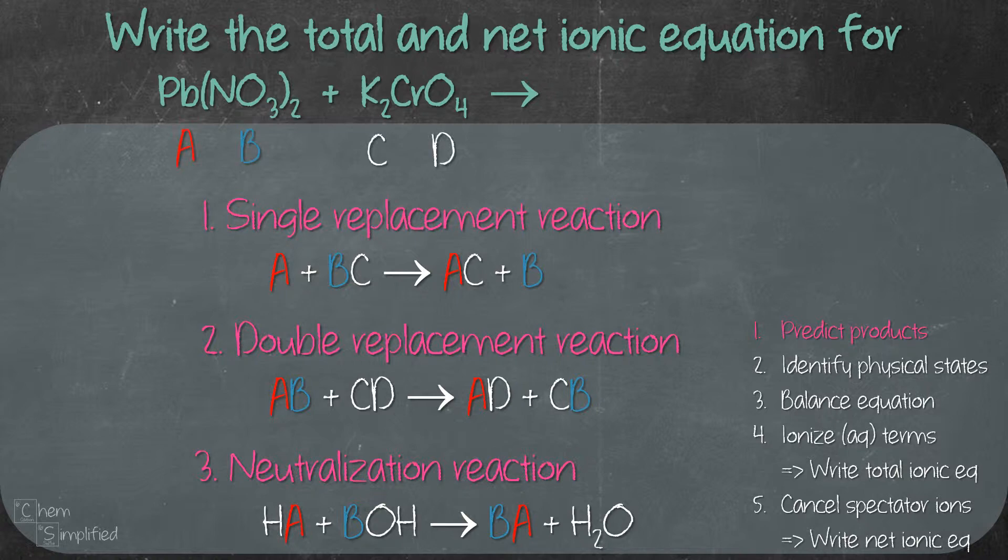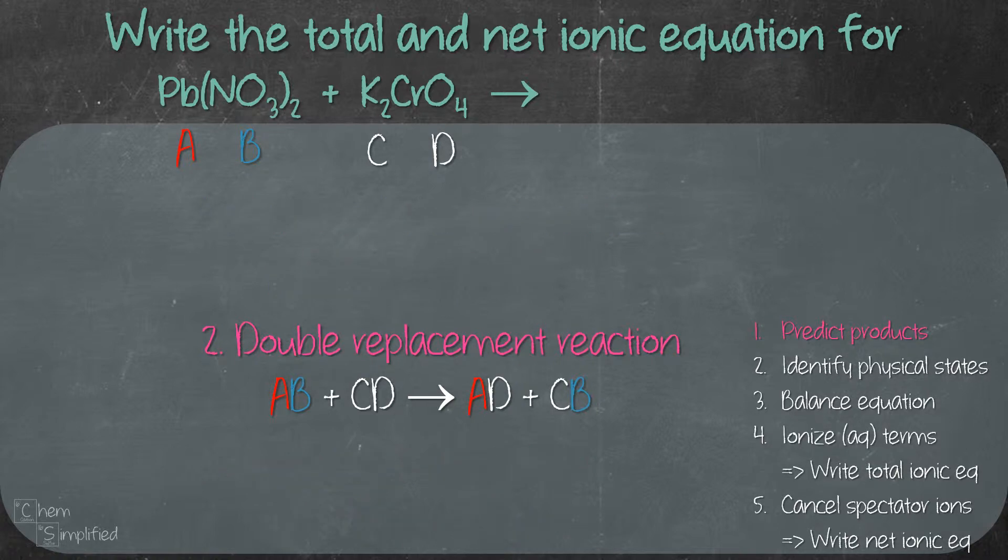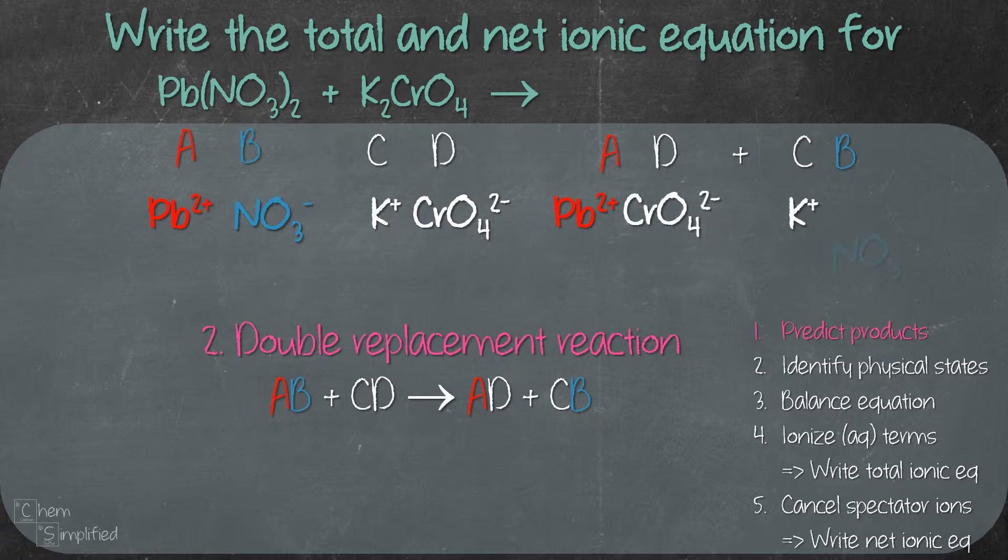This looks like an AB plus CD problem, which means we have a double replacement reaction. A is Pb²⁺, B is NO₃⁻, C is K⁺, and D is CrO₄²⁻. Now that we've identified our anions and cations, let's swap their partners. That will give us AD which is Pb²⁺ and CrO₄²⁻, and CB which is K⁺ and NO₃⁻. When we form the ionic compounds, AD is PbCrO₄ and CB is KNO₃. Make sure you pay attention to the charges when writing the formula.